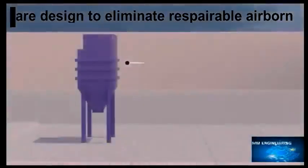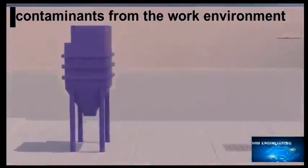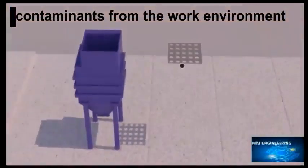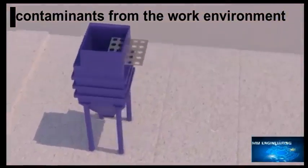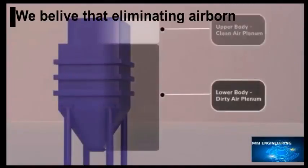Construction. This is the main body of the system. It is divided by a tube sheet into two parts. The lower body is called dirty air plenum and the upper body is called clean air plenum.